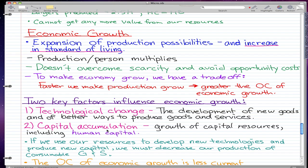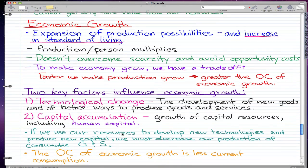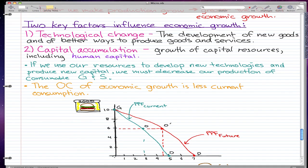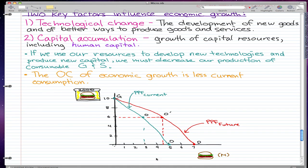These two factors are the reason why we have so many cars and global communication services. If we use our resources to develop new technologies and produce new capital, we have to decrease our production of consumable goods and services in the present. To make our future better, we have to decrease our consumption in the present. The opportunity cost of economic growth is less current consumption.